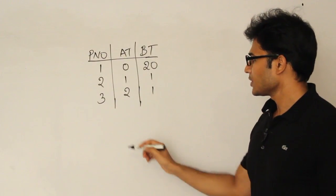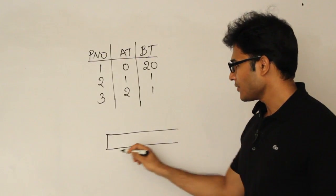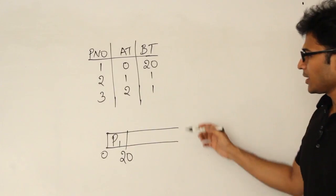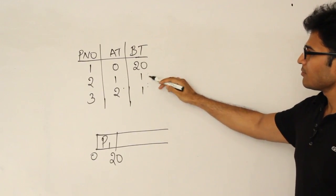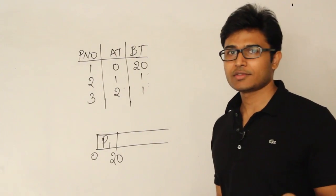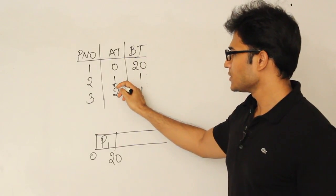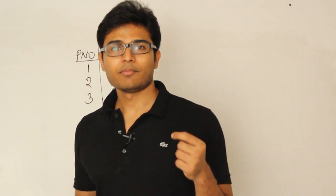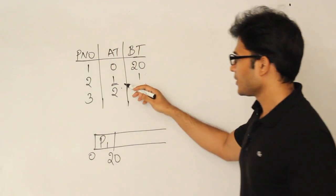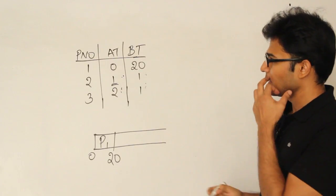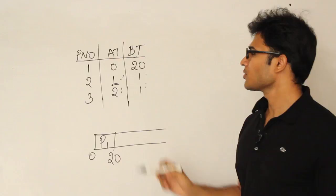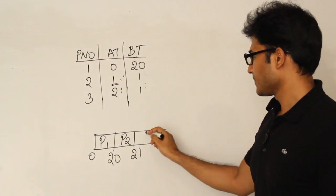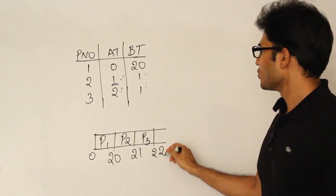The first one picked up at time 0 is P1 — I have no other option. It finishes at time 20. By time 20, P2 and P3 are available and both have the same burst time. Whenever two processes have the same burst time, we pick the one that arrived earlier. So the tie-breaker here is arrival time. P2 will be scheduled and runs till 21, then P3 runs till 22.